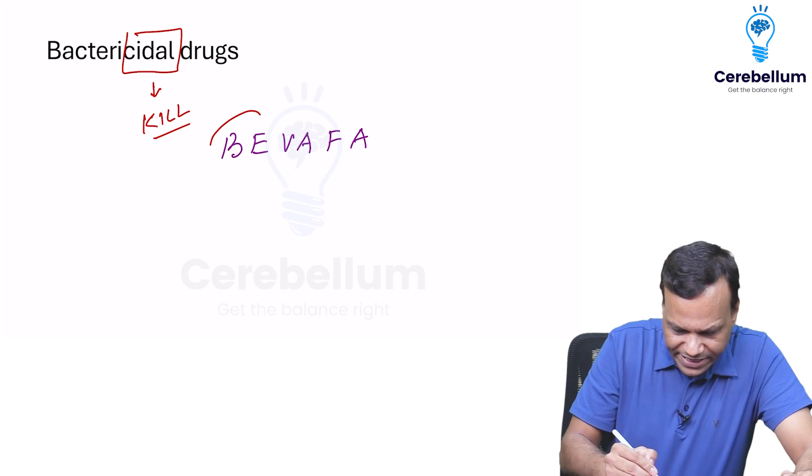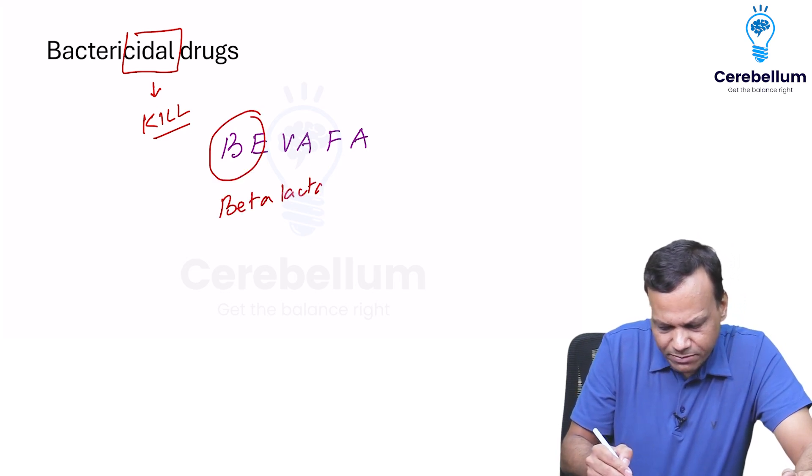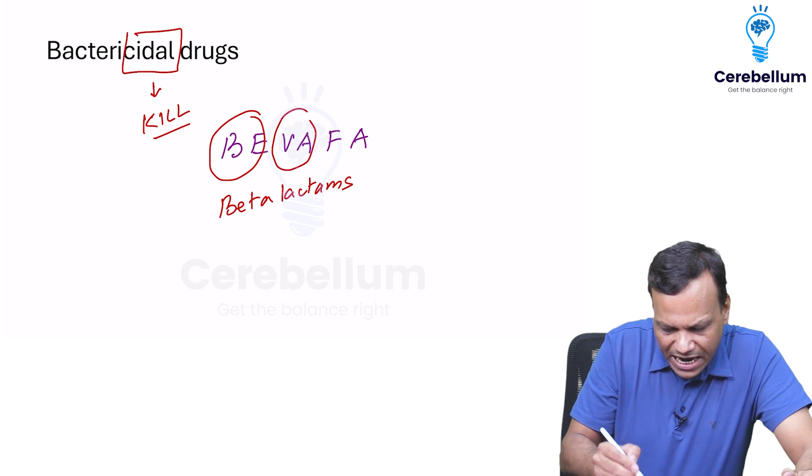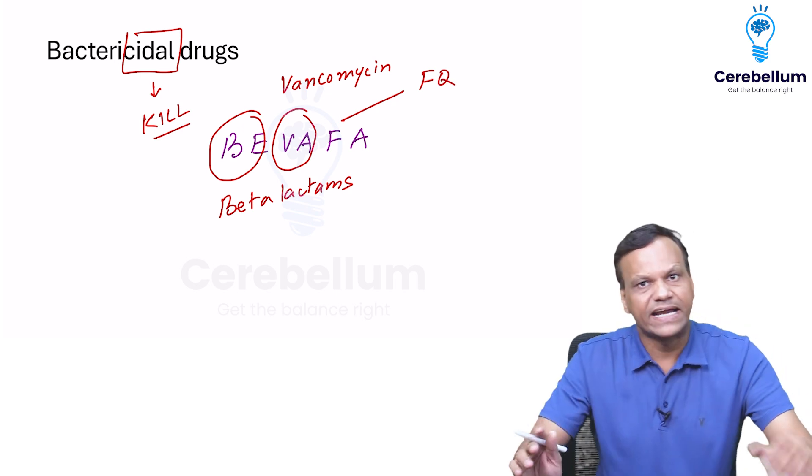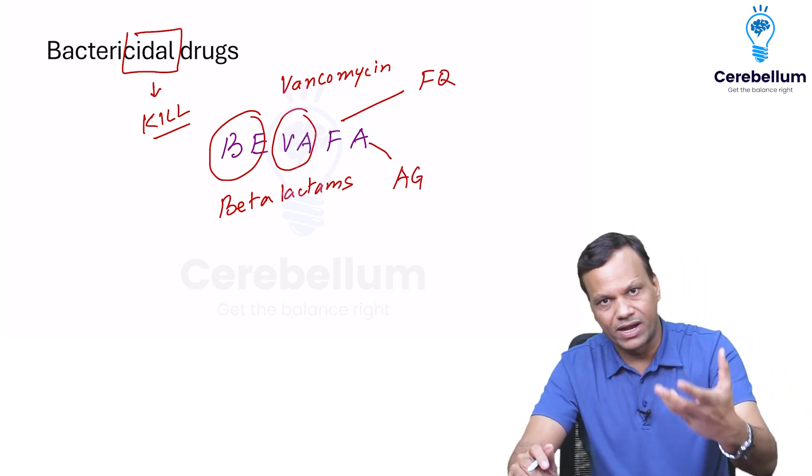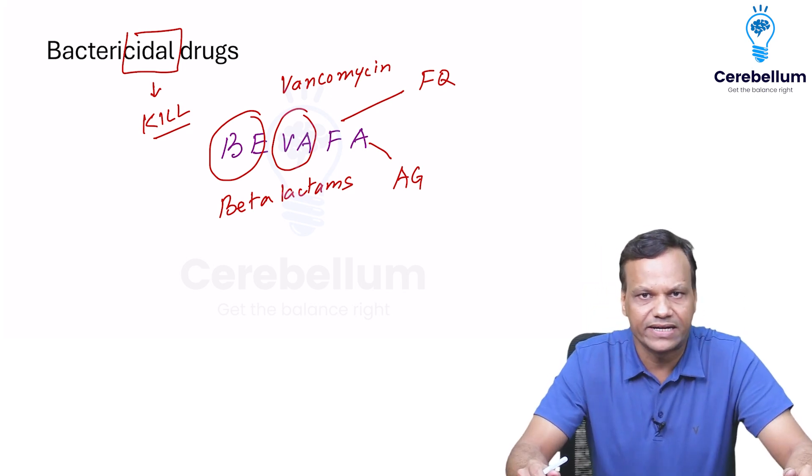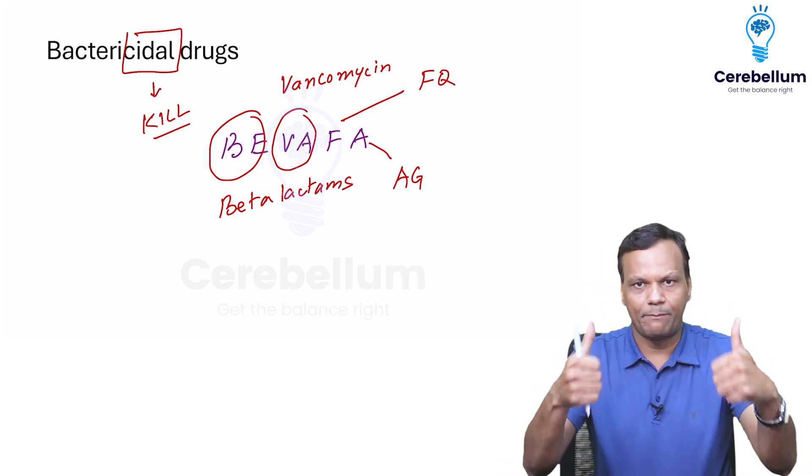So what are the drugs? B-E stands for beta-lactams. B-A stands for vancomycin. F is fluoroquinolones, drugs ending with floxacin. And A is aminoglycosides like streptomycin, amikacin, gentamicin-like drugs. So these are the important cidal drugs. Happy learning!